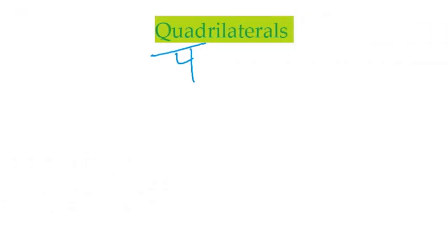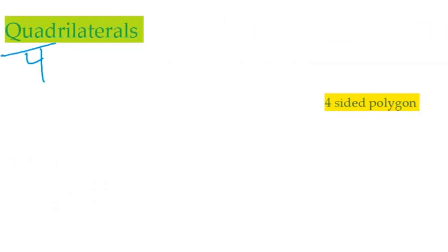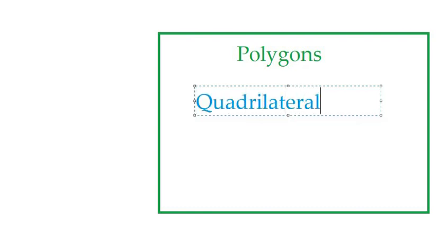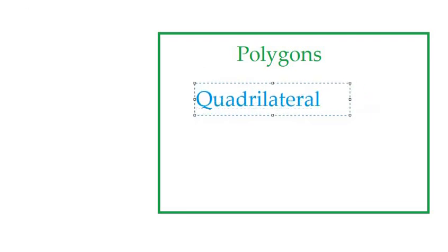Okay, let's move on. I want to drag this definition over. A quadrilateral is simply a four-sided polygon. Let's think about polygons as a really big group where a lot of other groups fit into it. So a quadrilateral is a type of polygon. So I'm going to type in quadrilateral here.